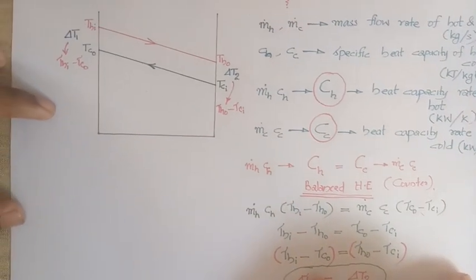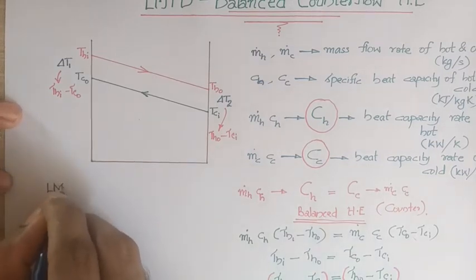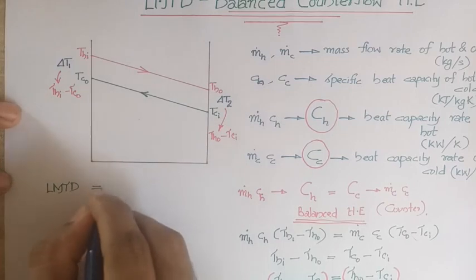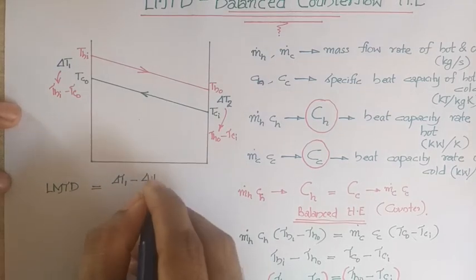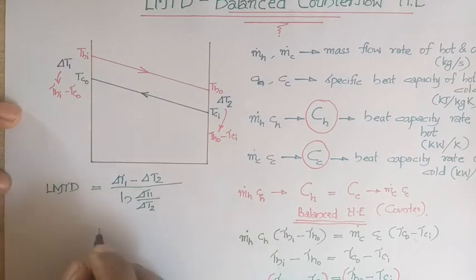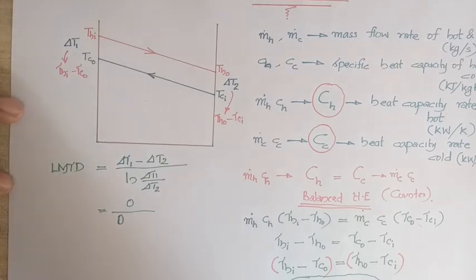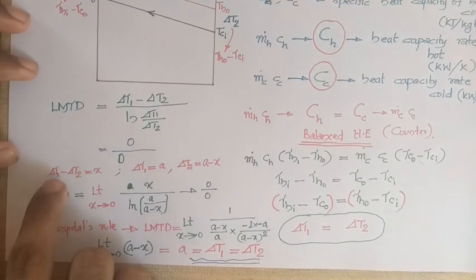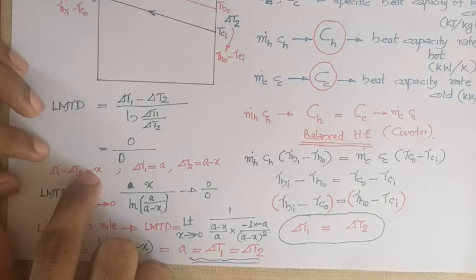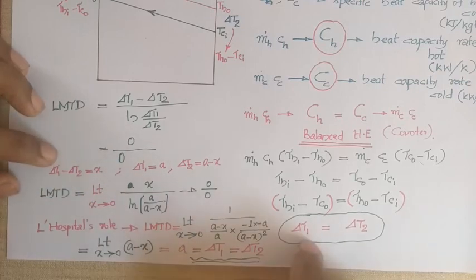If such a case arises, how do we find the LMTD? We know that LMTD for any heat exchanger is (ΔT1 − ΔT2) / ln(ΔT1/ΔT2). If we substitute ΔT1 = ΔT2, we get 0 divided by ln(1) = 0, giving a 0/0 indeterminate form which cannot be directly evaluated.